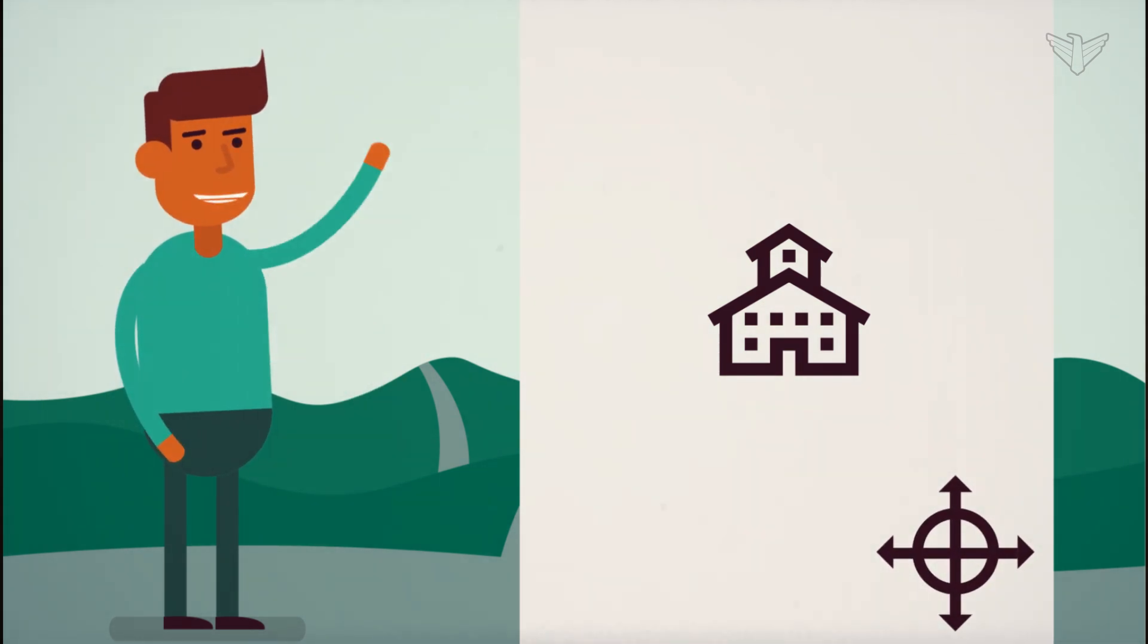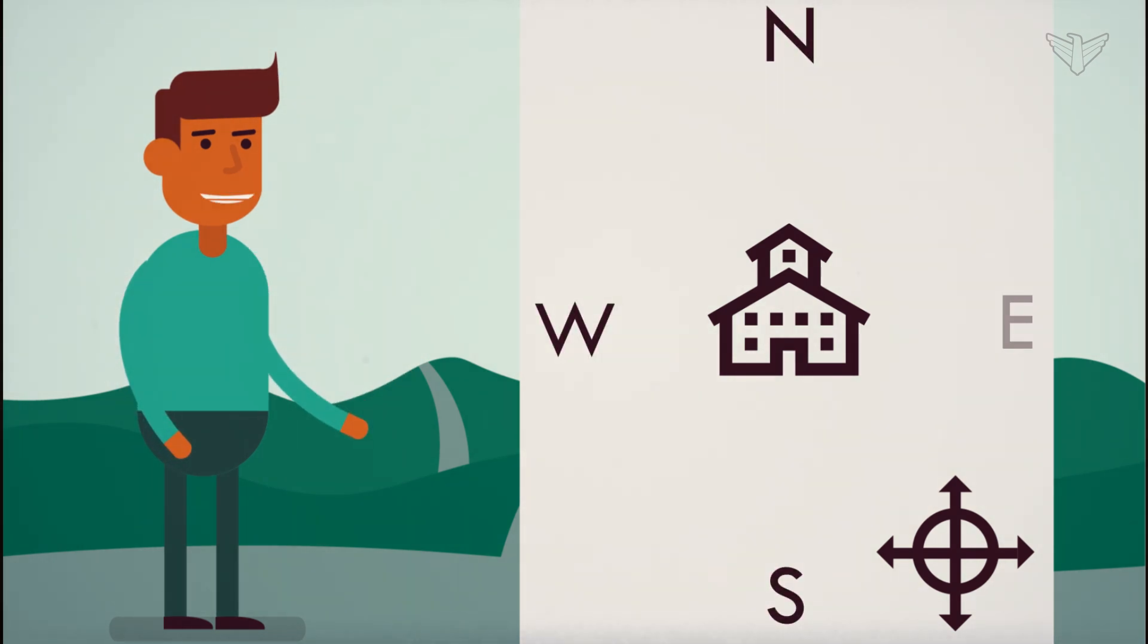Next, we drew the symbols for north, south, west, and east on the edges of the paper. Now for the fun part. We had to take a picture of something north of the school, something south of the school, something west of the school, and something east of the school.